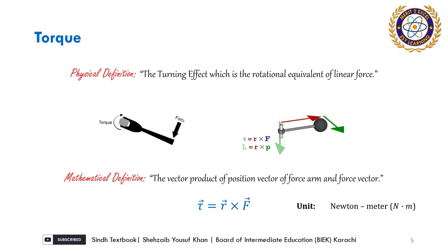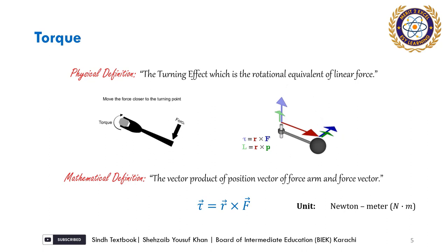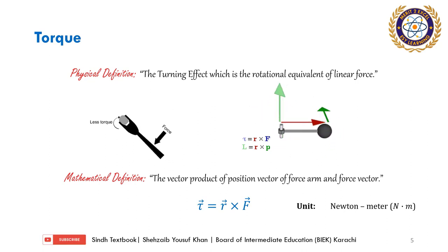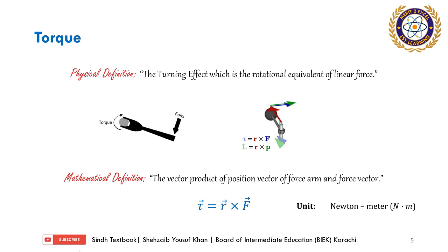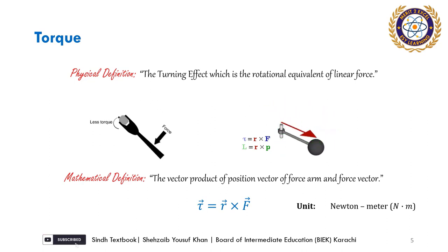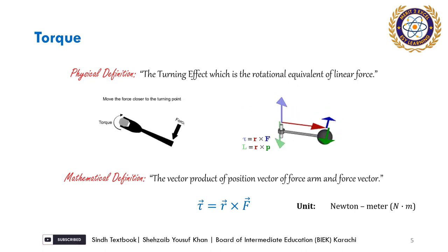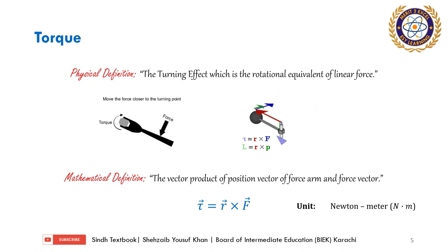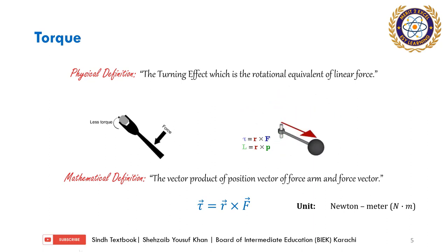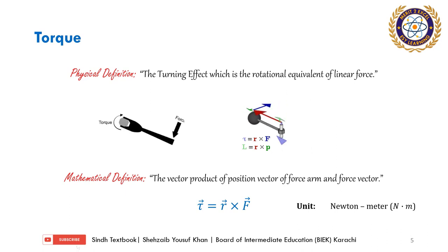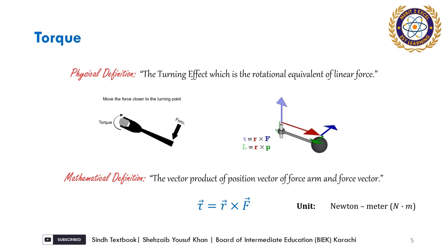For the mathematical definition of torque, we need to revise the concept of vector product. When vectors undergo a vector product, they curl — they rotate either clockwise or anticlockwise. If anticlockwise, their direction is positive and outward. If clockwise, their direction is inward and we use a negative sign. So mathematically, torque is the vector product of force arm and force, and it is a vector represented by tau, a Greek letter.